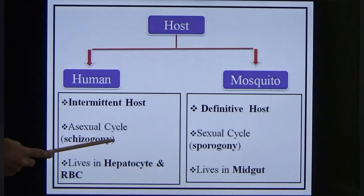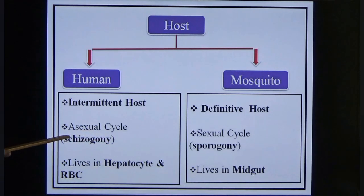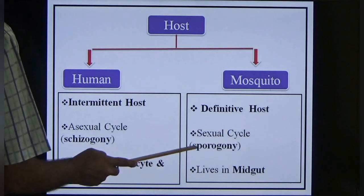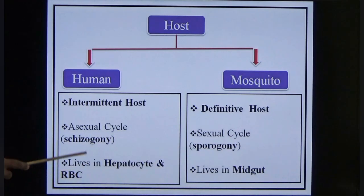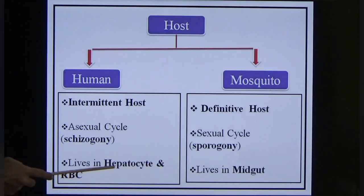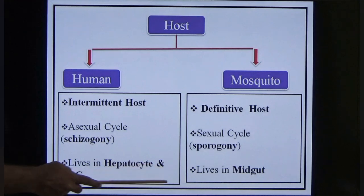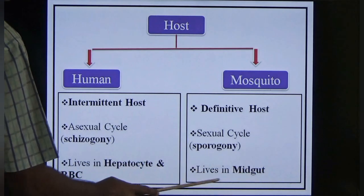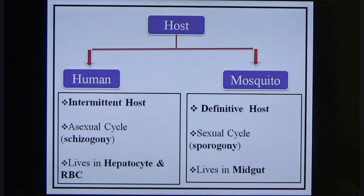The asexual cycle is otherwise known as schizogony — the word meaning 'dividing'. In the human, the parasite lives in the hepatocytes and RBCs; it first affects the hepatocytes then goes to the RBCs. In the mosquito, it lives in the midgut, which is the stomach.